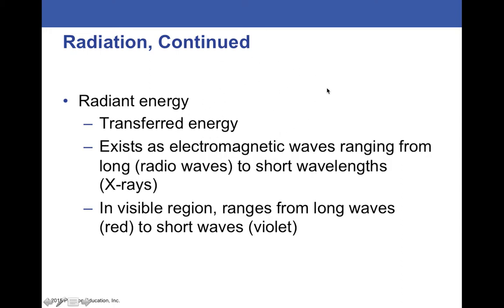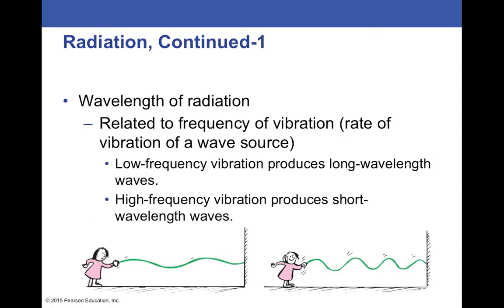Radiant energy, it's energy transferred from a hot to cold object. And it's electromagnetic waves. The longer waves are radio waves. The shorter ones are X-rays. In the visible region, we have the different frequencies of light. Red is the longer waves. And violet, the higher frequency, is the shorter waves.